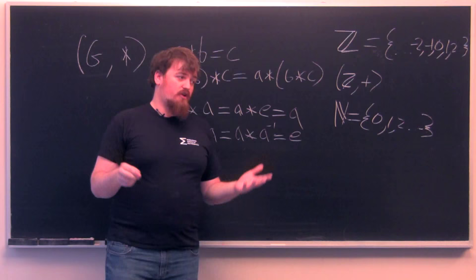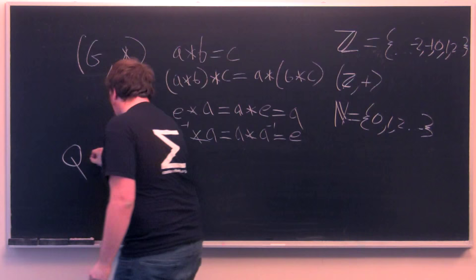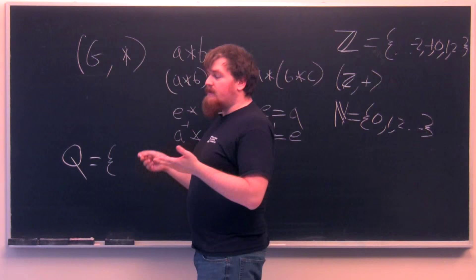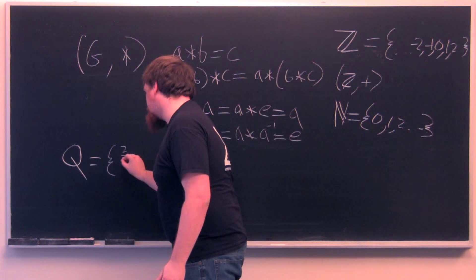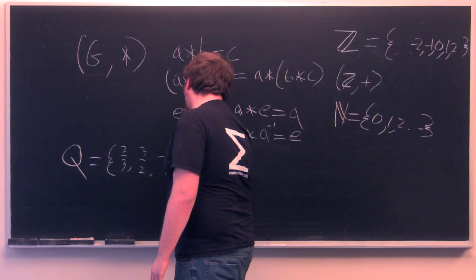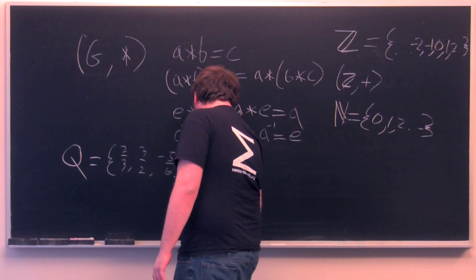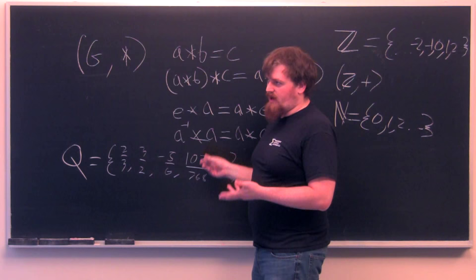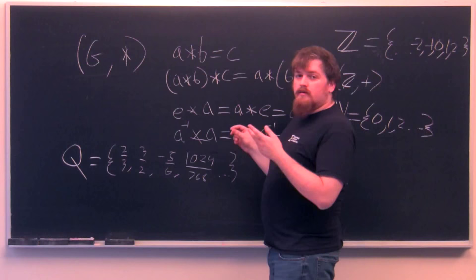So the first thing that might come to our head is the rational numbers, which as a set are called Q. And this is all your integers plus all your fractions of integers. So this is like 3 halves, or 2 thirds, 3 halves, negative 5 sixths, 1024 over 768, more or less any fraction which has a numerator and an denominator on the top and bottom. These are just, of course, all fractions.